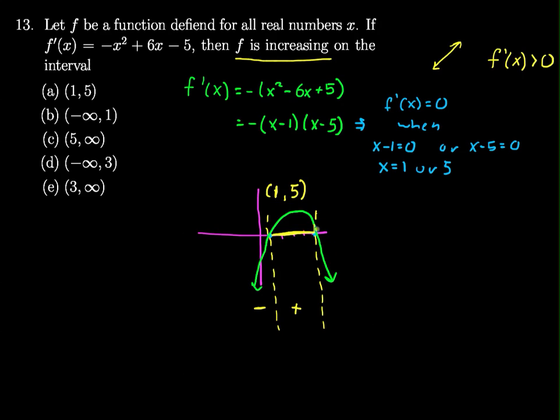And when I go out beyond here, so that's 5, if I put in 6, I get 6 - 1 is 5, 6 - 5 is 1, 1 times 5 is positive, but I have this negative on the front, so it has to be negative there as well.